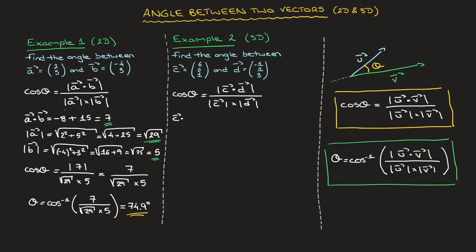Starting with the dot product, c dot d equals 6 times negative 1, which is negative 6, plus 0 times 1, which is 0, plus 1 times 3, which is 3. Adding all of that together, c dot d equals negative 6 plus 0 plus 3, which is negative 3.